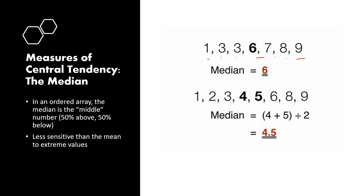For even numbers — for example, if we have eight total values — we take the two central middle values and calculate their average. In this case we have four and five, so we add them: four plus five equals nine, then divide by two to get 4.5. Remember, the median is less sensitive than the mean to extreme values.